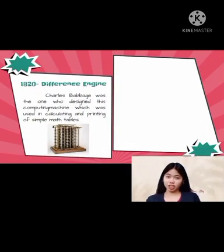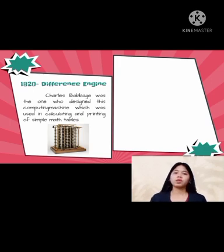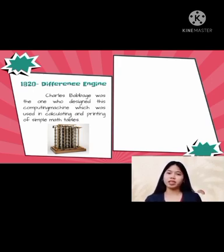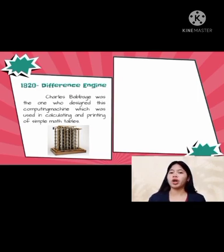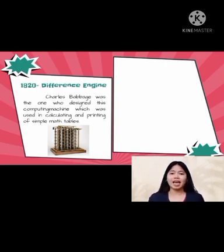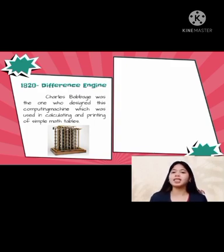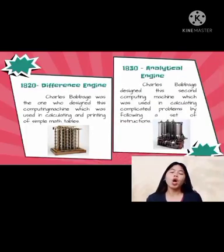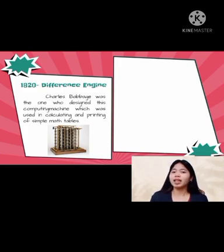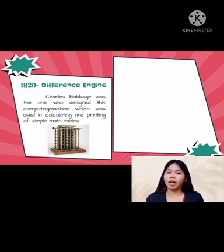In 1820, the Difference Engine. Charles Babbage designed this computing machine, which was used in calculating and printing simple math tables. The name is derived from the mathematical method of calculating differences between two numbers. A difference engine is a type of mechanical calculator built to perform polynomial computations, using small sets of coefficients to tabulate polynomial functions.